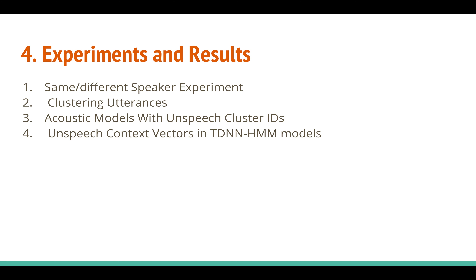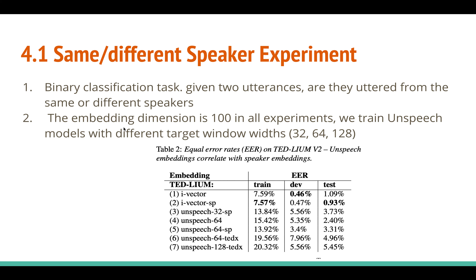The most interesting experiments are one and four. Experiment one is essentially speaker verification: given two utterances, determine if they are from the same speaker. Experiment four is about how UnSpeech context vectors improve the performance of a speech recognition model. We will focus on the first and last experiment; the second and third are available in the paper.